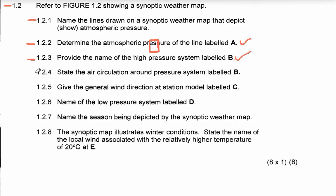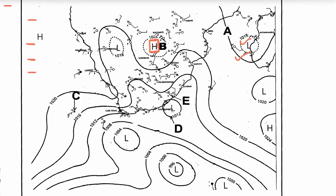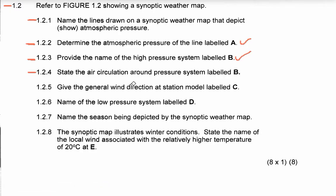Let's move to 1.2.4: describe the air circulation around pressure system labeled B. The Kalahari Anticyclone is an anticyclone, and anticyclones in the Southern Hemisphere circulate in an anti-clockwise movement. So the air circulation around the Kalahari High is anti-clockwise.